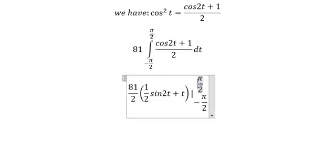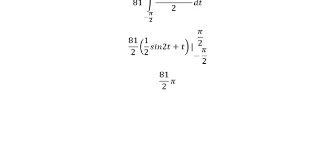We substitute π over 2 and negative π over 2, and we get 81 over 2 times π. That's it, the end. Thank you for watching.